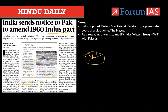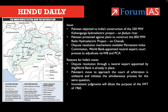The Kishanganga project is a 330 megawatt project — a major project India has been constructing across the Neelam river. Pakistan has objected to India's construction of the 330 megawatt Kishanganga hydroelectric project on the Jhelum river. Neelam is a tributary of Jhelum. Pakistan also protested against plans to construct the 850 megawatt Ratle hydroelectric project on Chenab. So the power production capacity will be 850 megawatt.